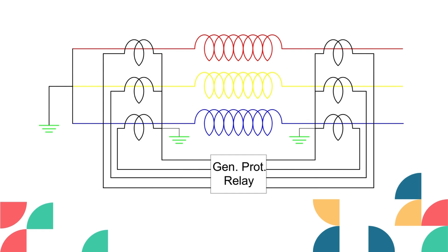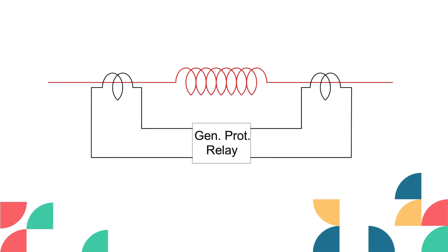Now the relay has the information about the currents flowing through each phase. To make it easier to understand, we will consider any one phase because the concept is the same for each phase. If we consider three phases at a time, the circuit will be complex and difficult to understand. So let's move forward step by step.